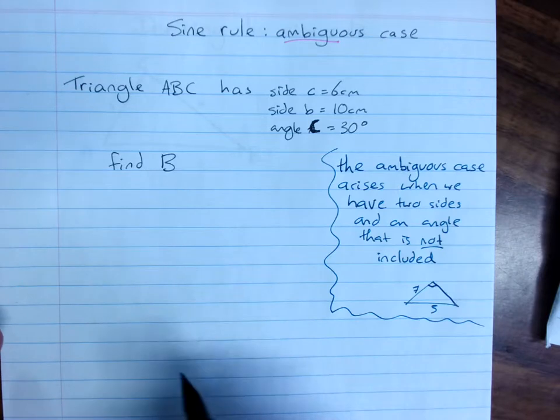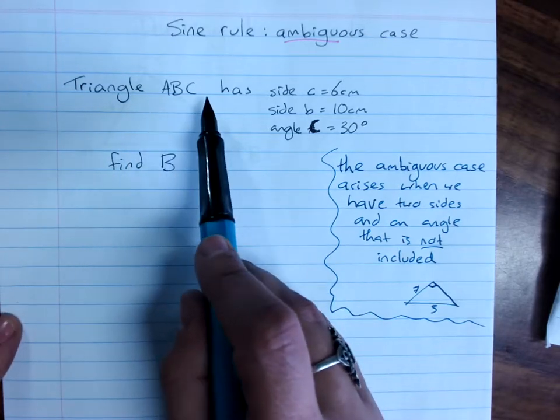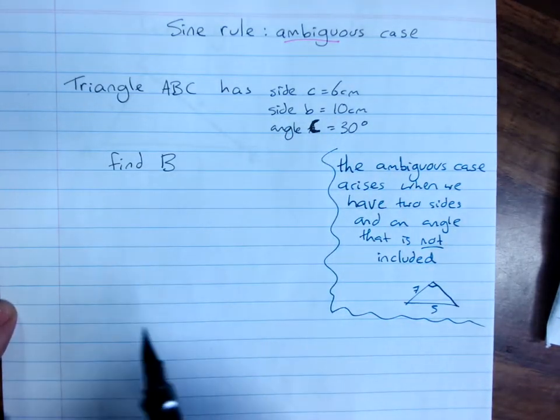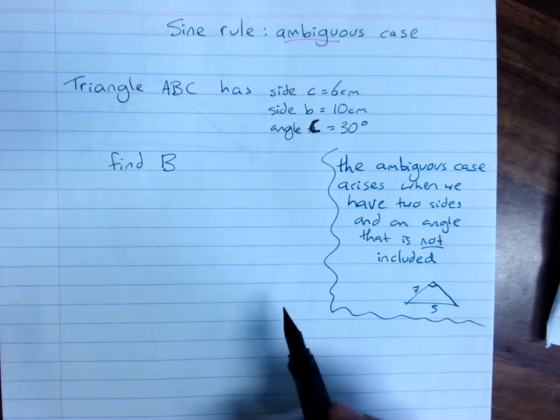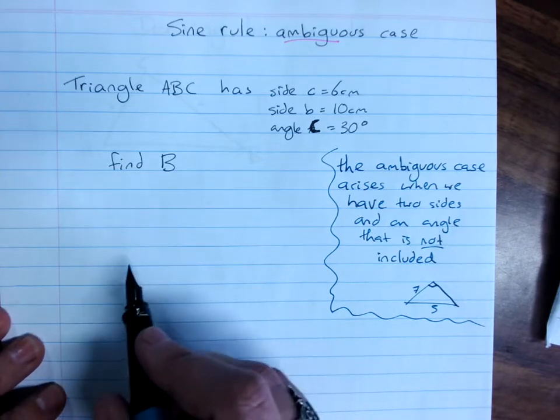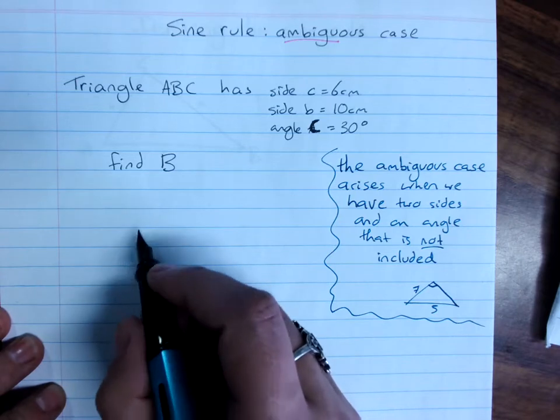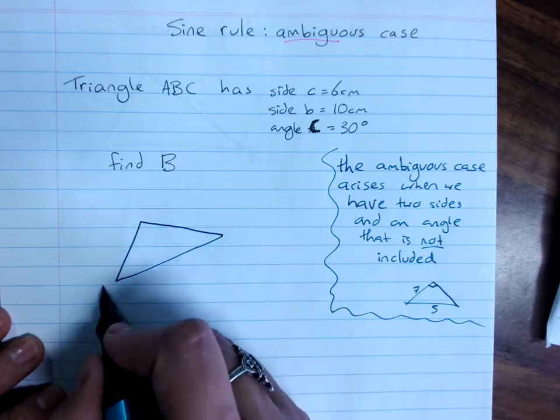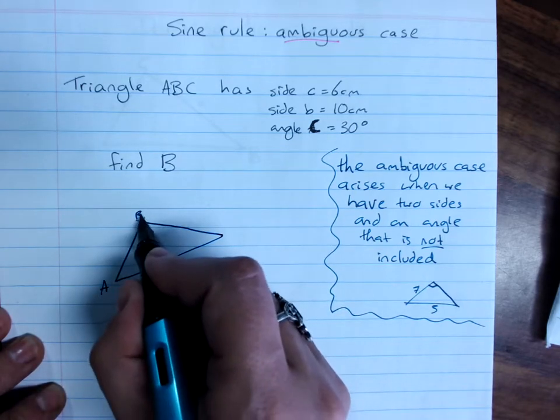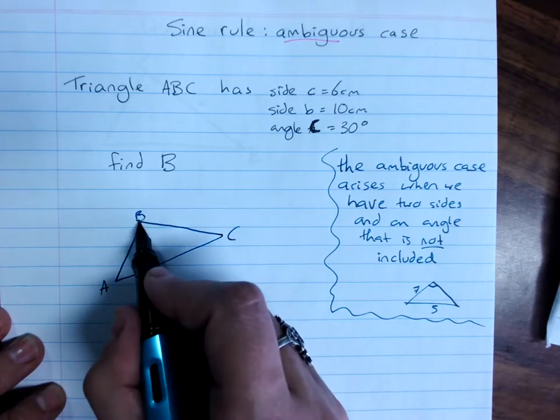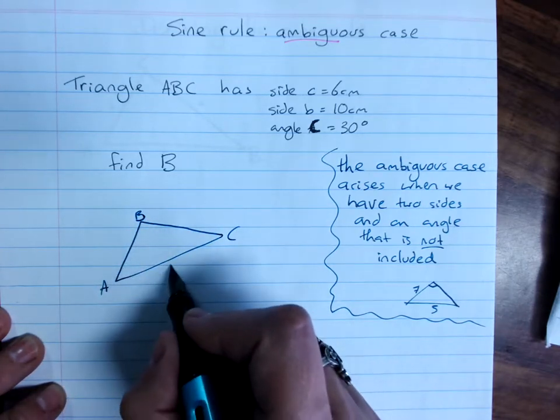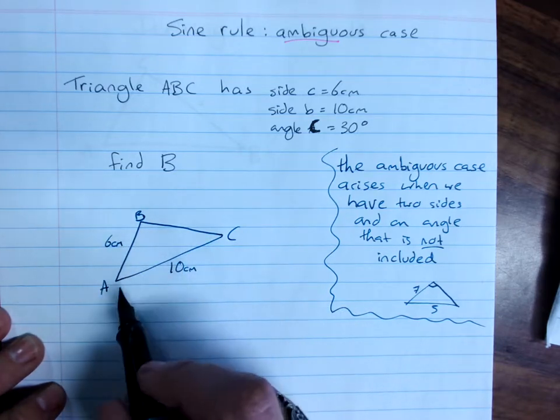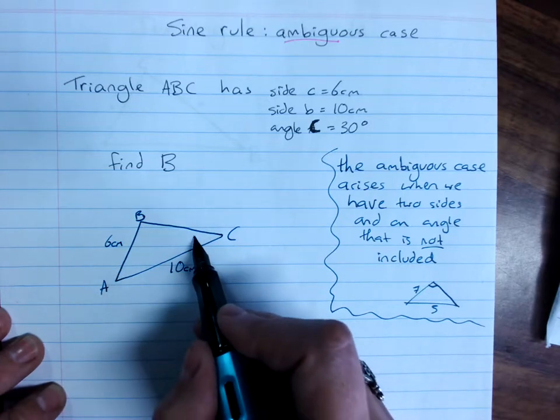So an example is this triangle here. Triangle ABC has side c = 6cm, side b = 10cm, and angle C = 30 degrees. Now they've said to find angle B. If we draw this, we've got angle A, B, C, and I've been told I've got 10 centimeters for side b, side c is 6 centimeters, and I know that this one here is 30 degrees.